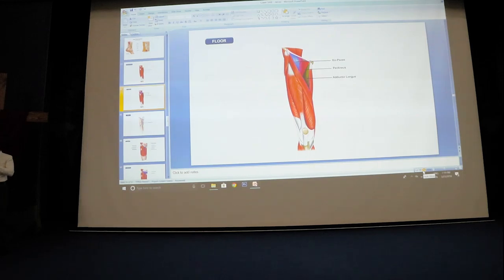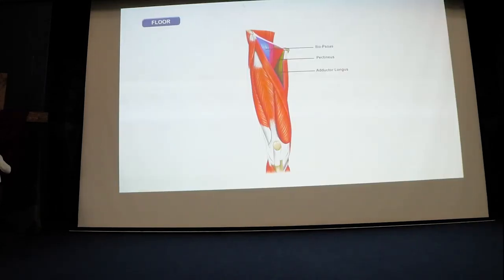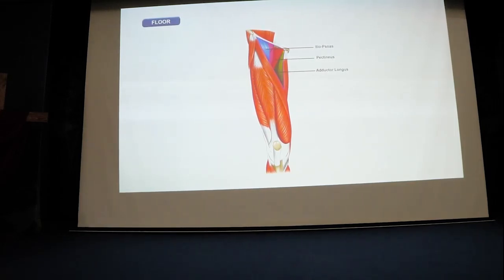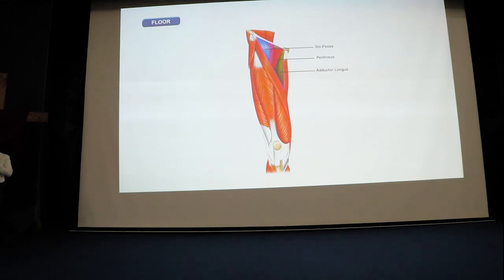The base of the femoral triangle is formed by the inguinal ligament, which extends from the anterior superior iliac spine to the pubic tubercle. The inguinal point is an important reference area for the femoral artery. Medial to the inguinal point is related to the vein, and lateral to the inguinal point is related to the nerve — the femoral vein and the femoral nerve respectively.